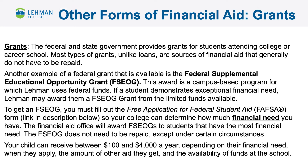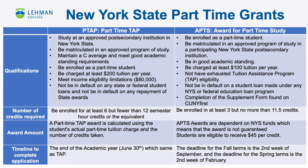One of the main forms of financial aid awarded to students is grants. The federal and state government provides grants for students attending college or career schools. Most types of grants, unlike loans, are sources of financial aid that generally do not have to be repaid. Another example of a federal grant is the Federal Supplemental Educational Opportunity Grant, or FSEOG, which can be awarded to students who demonstrate exceptional need. Part-time grants available from the state include part-time TAP, or P-TAP, and the Award for Part-Time Study, or APPS. While both awards can be given to students enrolled part-time, the main difference is that P-TAP awards are guaranteed based on TAP application eligibility, while APPS awards are based on state funding and are not guaranteed.